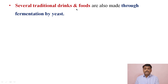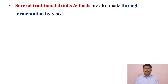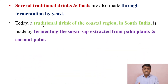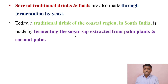Several traditional drinks and foods are also made through fermentation by yeast. For example, toddy is a traditional drink of the coastal region in South India, made by fermenting the sugar sap extracted from palm plants and coconut palm.